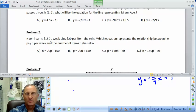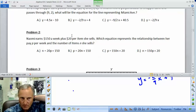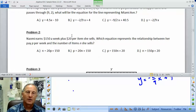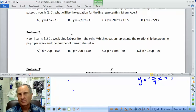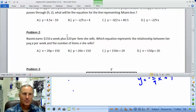Problem 2. Naomi earns $150 a week plus $20 per item that she sells. Which equation represents the relationship between her pay, P, per week, and the number of items she sells? We've been doing stuff like this already, whether it's the price of our gas, price per gallon, how many gallons, and how many nights are we going to stay, and the price per night.